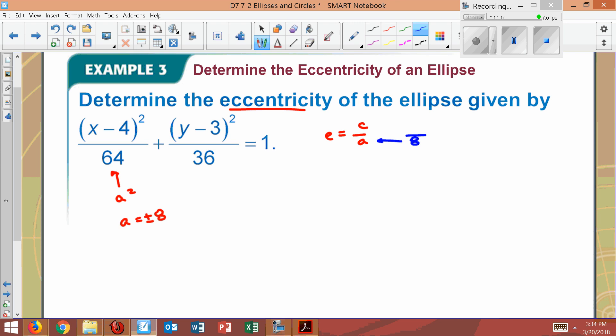And now to find C. Well, how do we find C? C comes from the formula. C squared equals A squared minus B squared. So if A squared is 64, B squared is 36, then my C squared will come from that. You subtract, and I believe I get here 28.